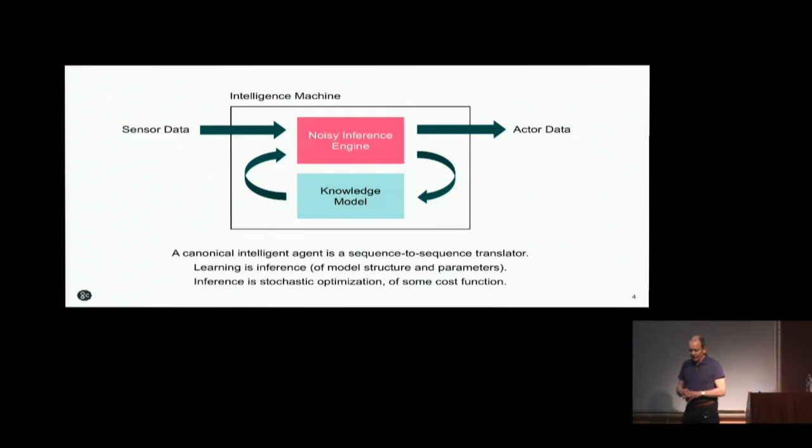So what do we need to build? To build an intelligent machine we require two parts. I like to put this up because it offends people who think it's much more complicated than this. Of course it is. But this is the simplest picture that I can draw. An intelligent machine ultimately is a sequence to sequence translator. It senses events in its environment as a sequence and it produces a sequence of actions. It may, they're not necessarily related, it doesn't have to produce an action every time it senses something.